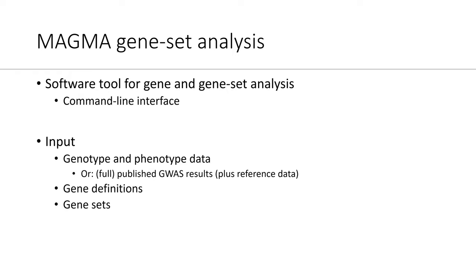If you provide summary statistics, you would also need some reference data because we need information on the LD structure between the SNPs that are part of your analysis. The other input is gene definitions — that's which SNPs belong to which genes — and also definitions of gene sets. If you download MAGMA, there are some default files that you can use, but you're also free to use your own files.